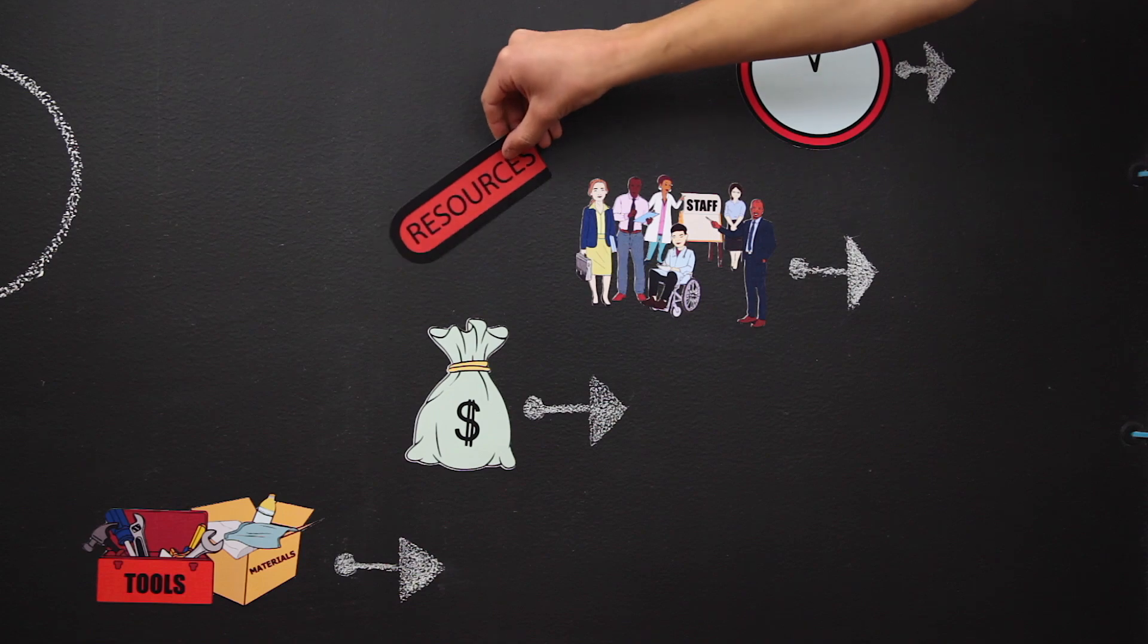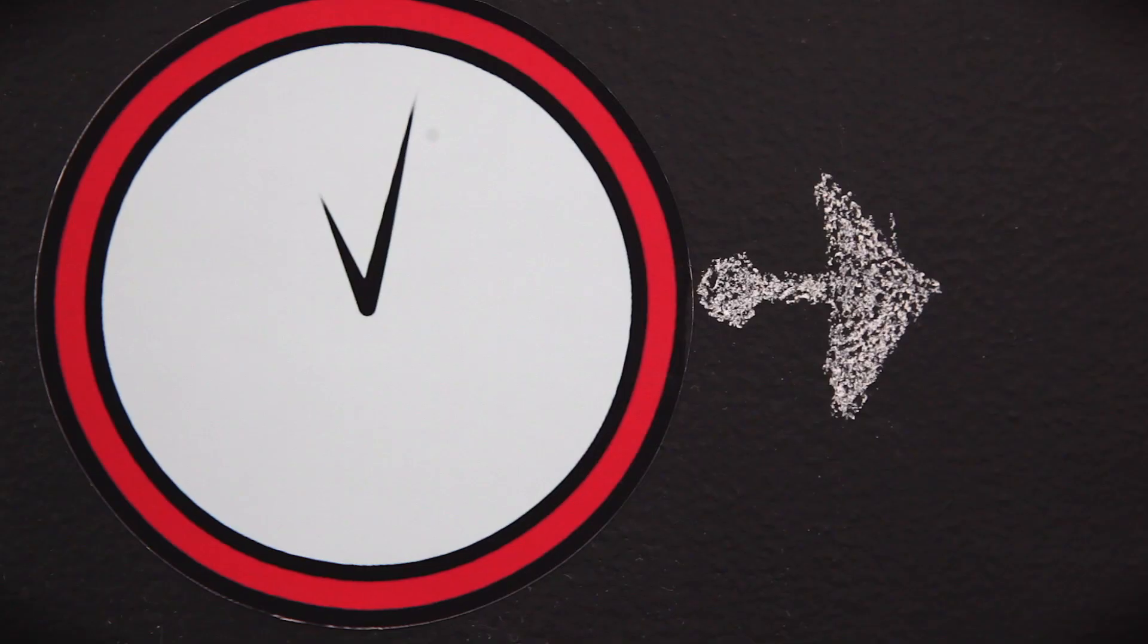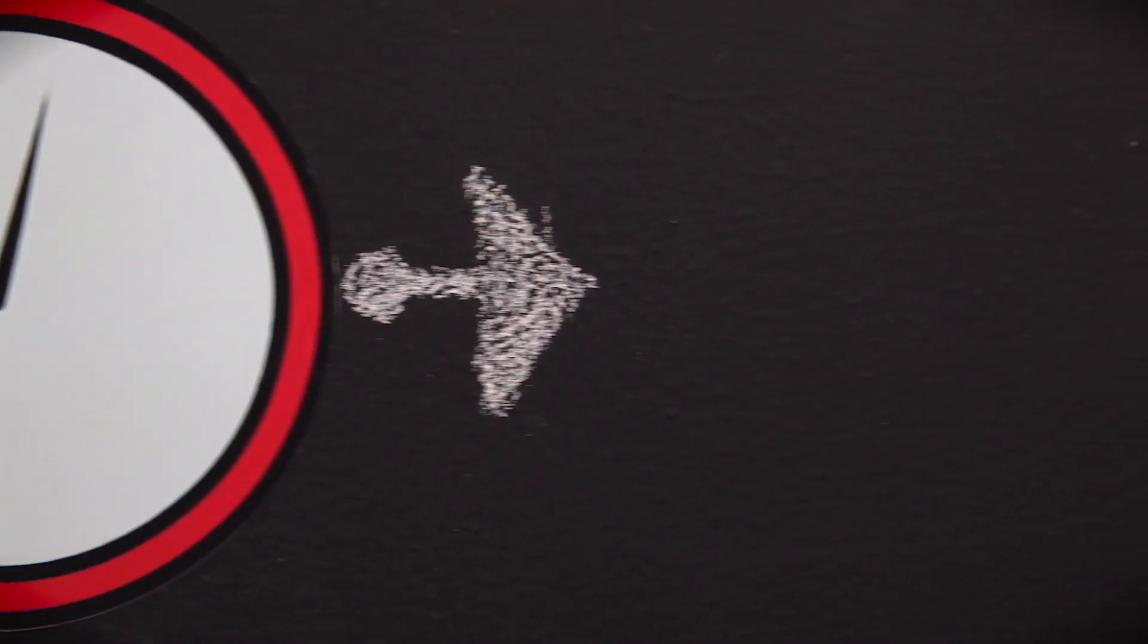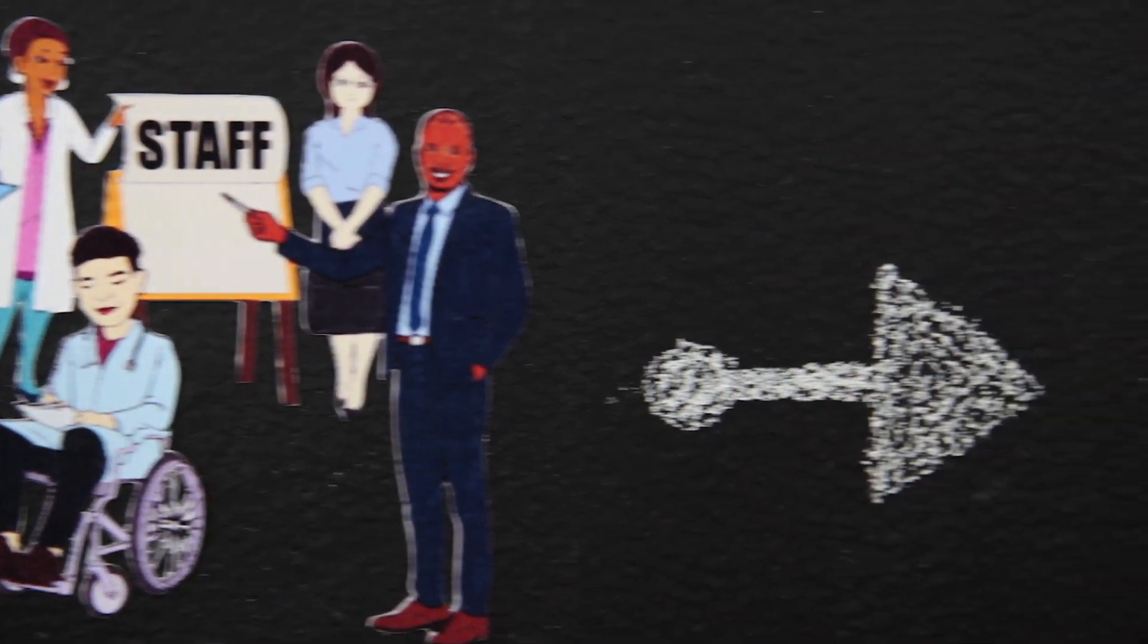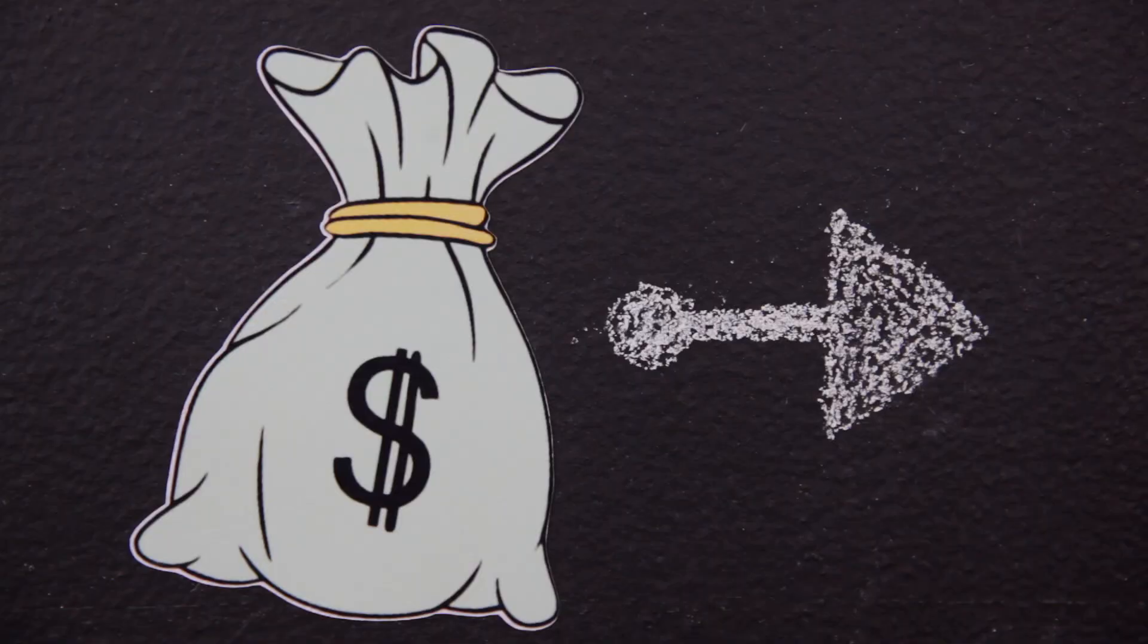The next leg of our stool is our resources and constraints. In my case, I have to keep my activity to an hour, including time for cleanup. I can't count on having another staff member to help me, and I don't have any money to spend on new materials.